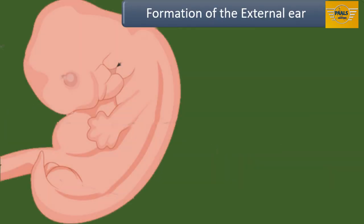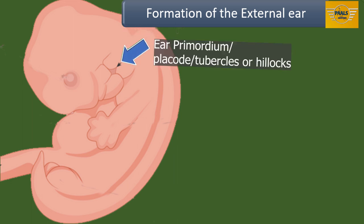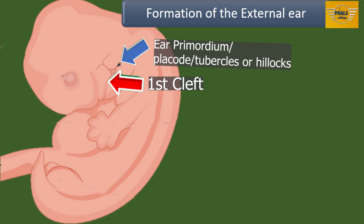Next is the formation of the external ear. The external ear is formed as a result of a series of mesodermal thickenings called tubercles or hillocks, seen at the first cleft — the external groove between the first and second pharyngeal arches. These tubercles give rise to the pinna. When first formed, the pinna lies inferior to the developing jaw, but is pushed upwards and backwards to its definitive position due to the great enlargement of the mandibular process. If the mandibular process fails to enlarge properly, it will affect the final position of the ear.